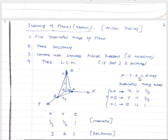Now we will see how the indexing of atomic planes is done — this is known as Miller indices. First, we have to find the intercepts made by the plane along each axis: X, Y, and Z. Suppose a plane ABC has been given. This plane makes an intercept of 1/3 along axis X (distance OA), 1/2 along axis Y (distance OB), and 1 along axis Z (distance OC). So the intercepts are 1/3, 1/2, and 1.